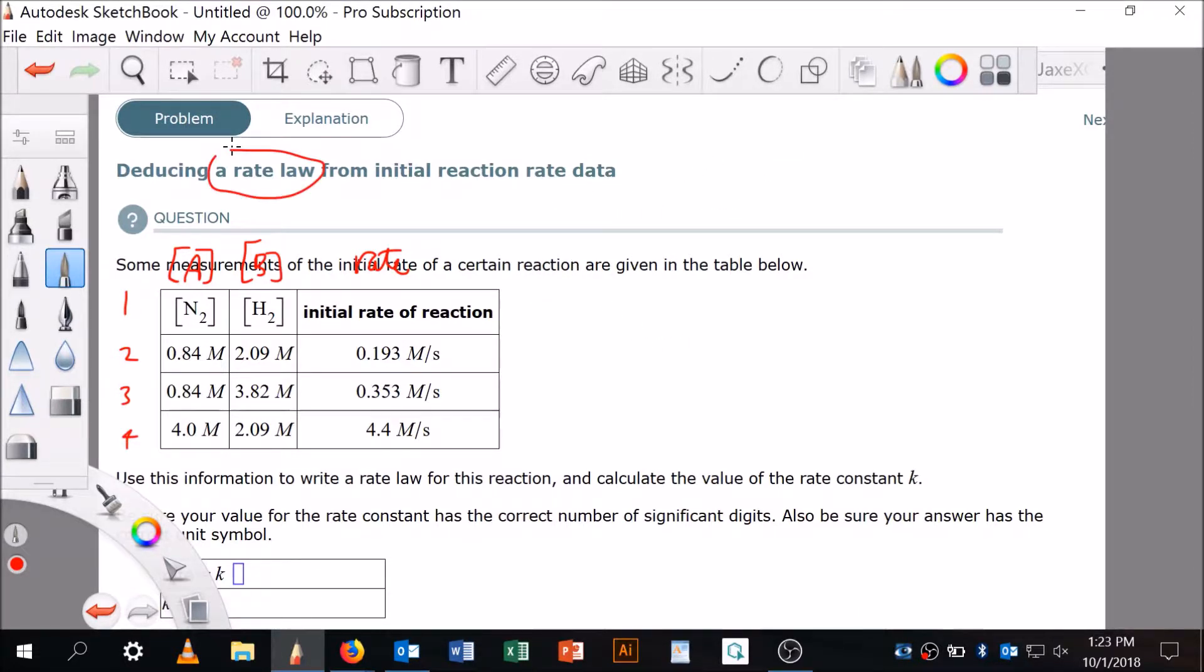Recall that what we're doing is we're looking for the rate law, and the form of the rate law is going to be rate equals k times [A] raised to the X, [B] raised to the Y.